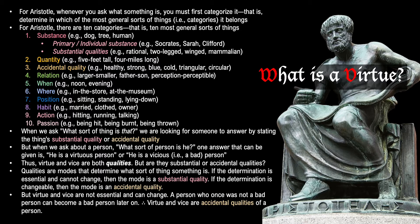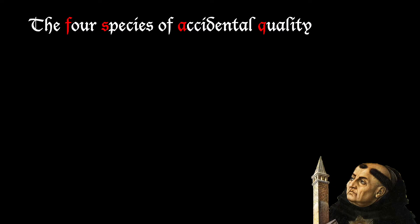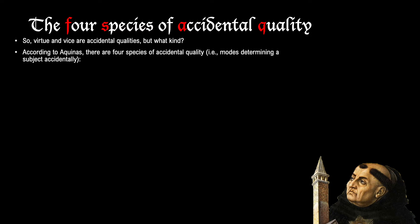So when we ask what is virtue, the first part of our answer is to categorize it. We've put virtue in the category of accidental quality. Now, St. Thomas goes on to explain that there are four species of accidental quality. Virtue and vice are accidental qualities, but in which of these four species? The first species is the mode determining a subject with respect to the nature of that subject — an accidental determination related to the nature of the subject and its ordering towards an end.